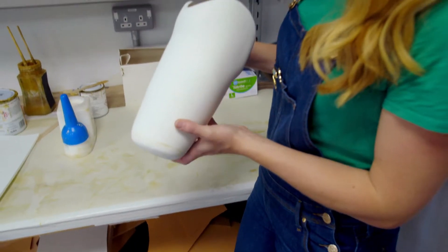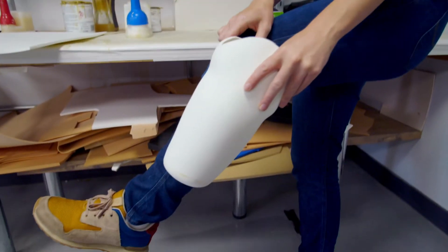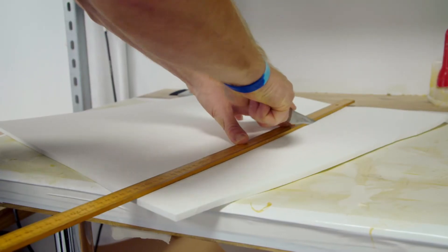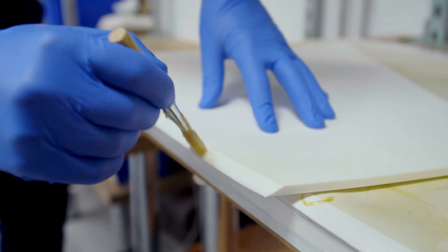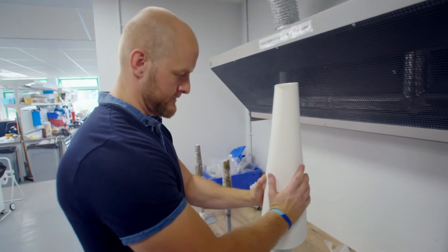The next part that Adam's making is called the liner. And the liner will fit over the person's leg, so it has to be nice and comfortable. So it's made from this spongy foam, which Adam cuts, glues and shapes around the model on a machine called a vacuum former.